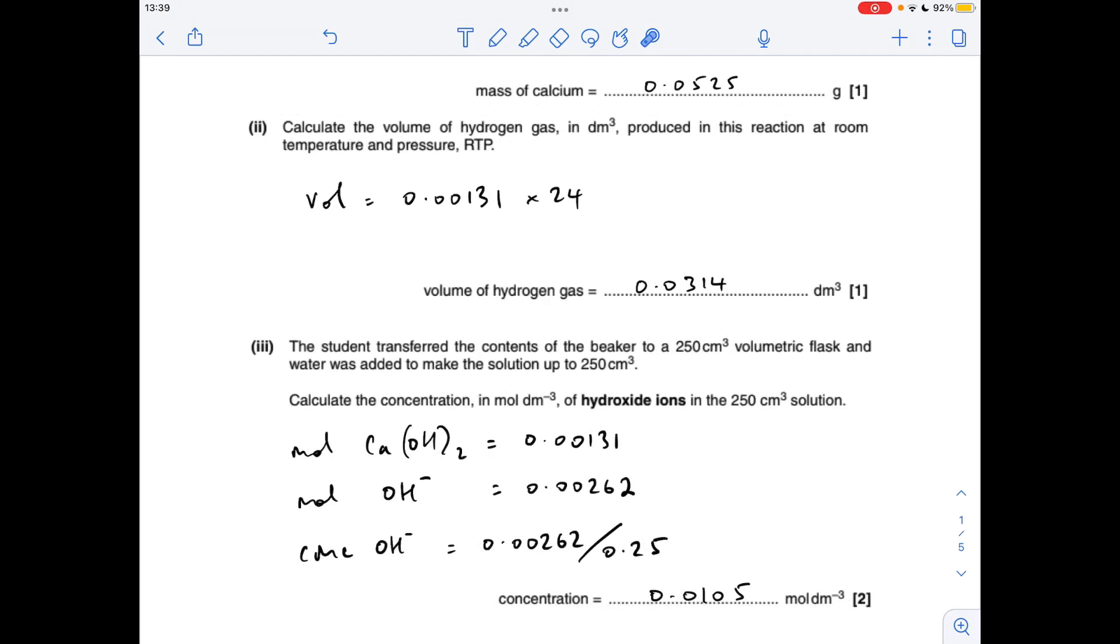And the final part of the question: the concentration of the hydroxide ions in this 250 cm³ solution. So the moles of calcium hydroxide that's going to form will be the same as the moles of calcium used, but the moles of hydroxide ions, you can see from the formula there, is going to be double that.